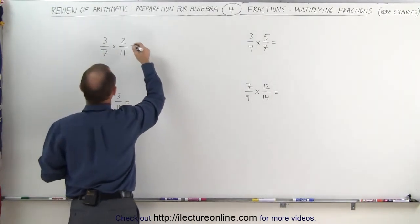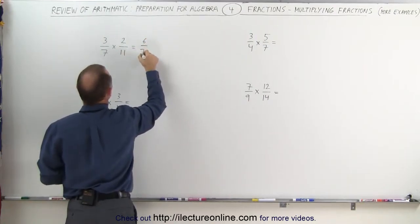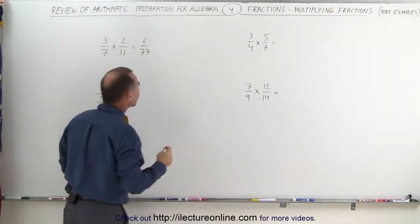And we continue with saying 3 times 2 is equal to 6, and 7 times 11 is equal to 77. And we're done.